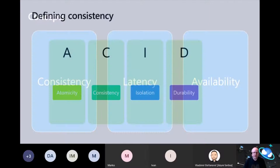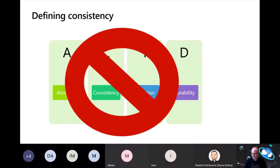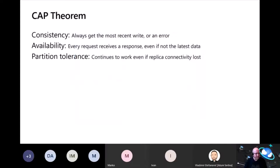Before we get started, I want to define consistency. Most people recognize consistency in the context of a relational database in a transaction. However, for a distributed data store like Cosmos, this is not what we mean when we talk about consistency. Rather, consistency in a distributed system means the uniformity of data in replicas that are separated by hundreds or even thousands of miles. Fundamentally, a different thing. With that definition, let's dive in.